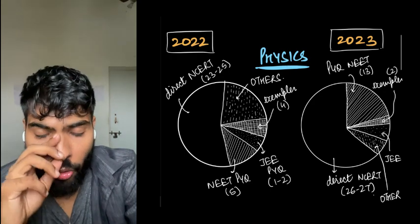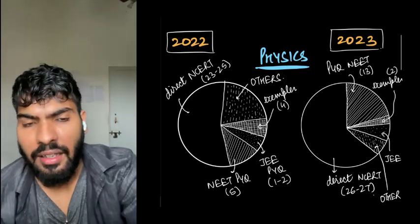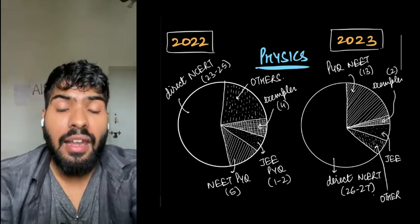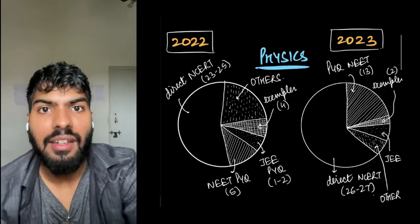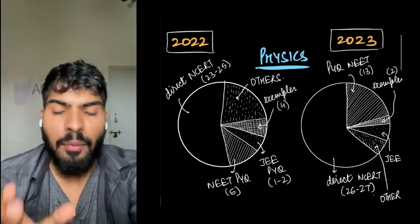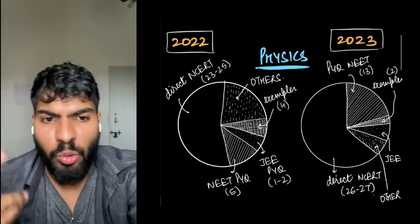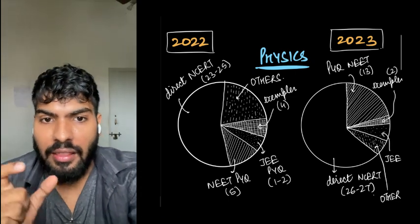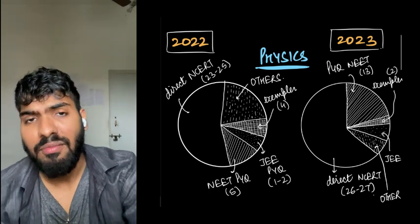If I talk about 2022, you'll notice that 23 to 26 questions were directly asked from NCERT. These direct questions were from in-text and examples. In 2023, you'll notice that this has increased to 26 to 27 questions. If I talk about exemplar, then four questions were asked last year; this year it has dropped to around two questions. NEET previous year questions: last year were five, this year they were somewhere around 13.